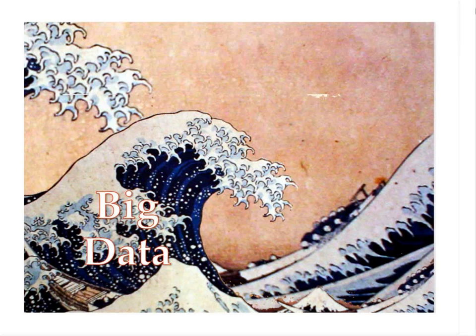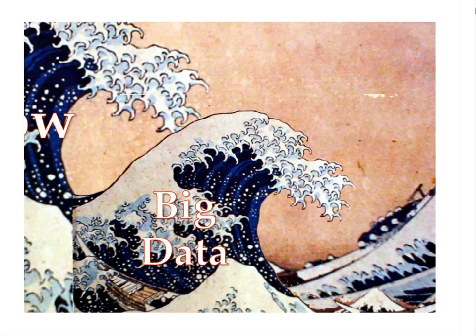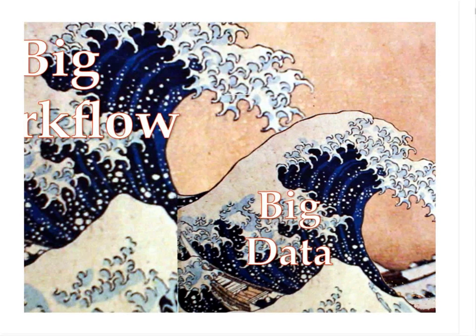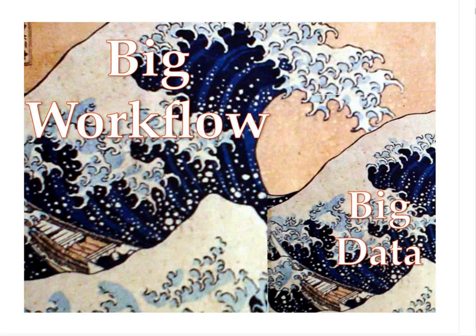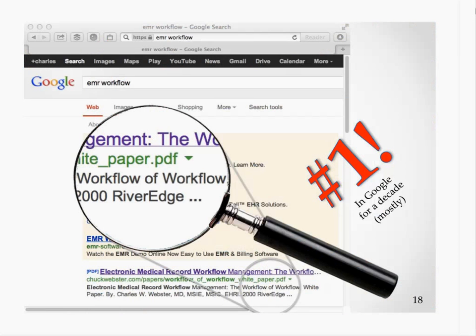You've probably seen the big wave and heard the phrase 'big data.' I will argue that close on the heels of big data is something I call 'big workflow.' About 10 years ago I wrote a white paper on healthcare workflow that's been number one in Google for nearly a decade, and I used a phrase there: 'the workflow of workflow.' Just as data about data is metadata, and thinking about thinking is metacognition, workflow about workflow is meta-workflow — though I prefer 'workflow of workflow' as a phrase.